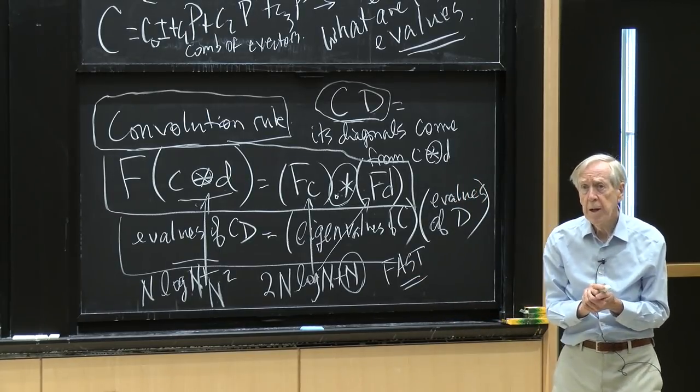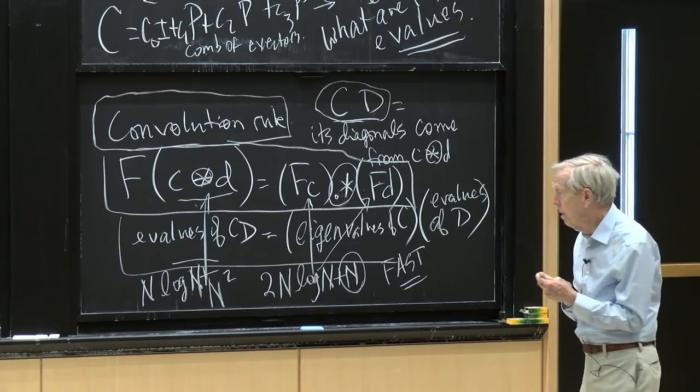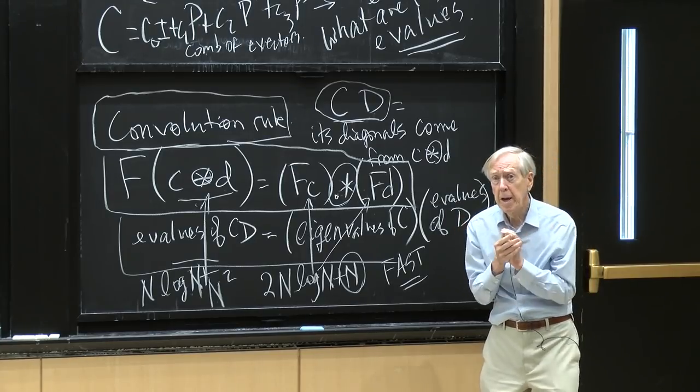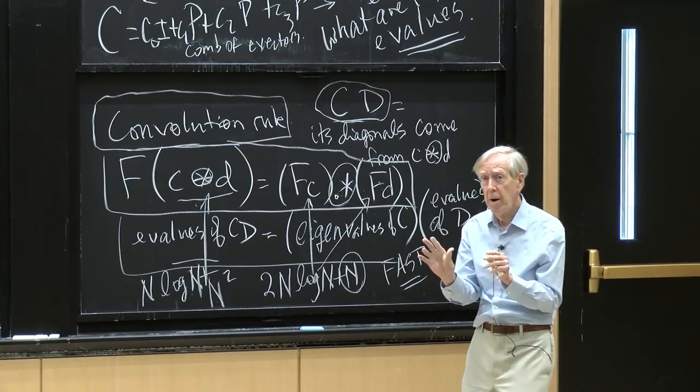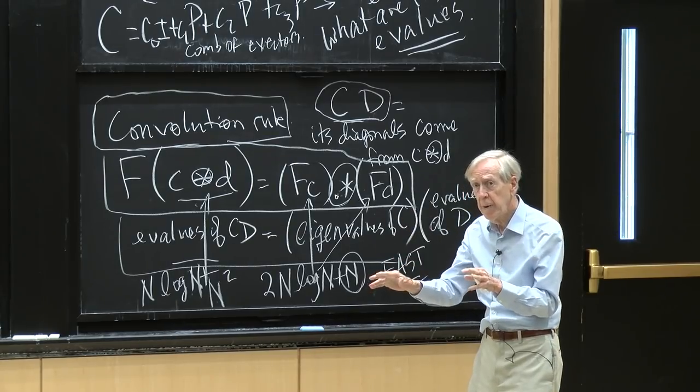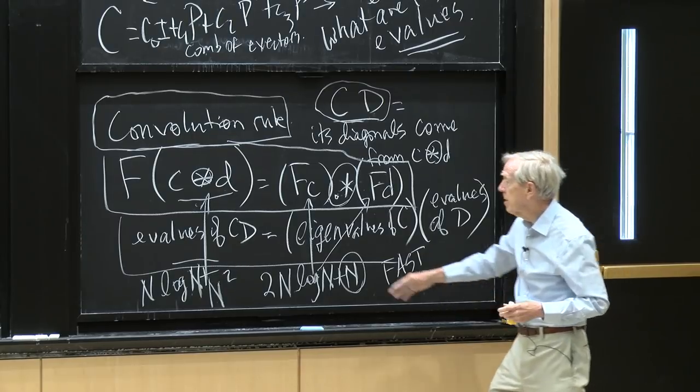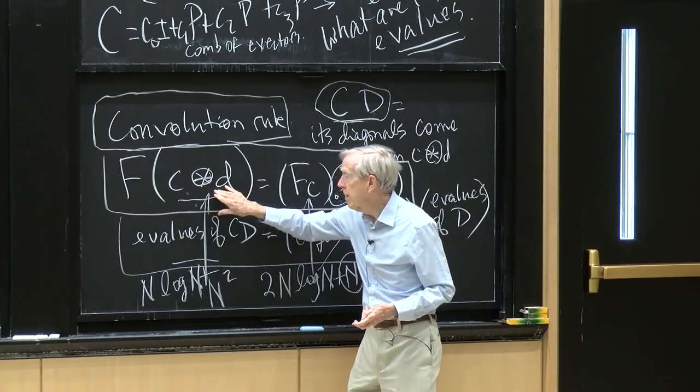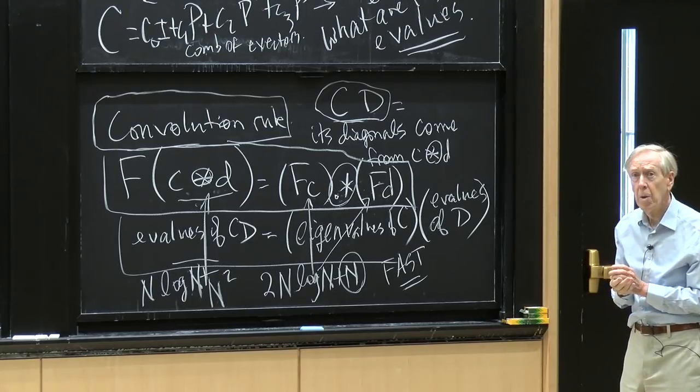So if you wanted to multiply two really big long integers, as you would want to do in cryptography, if you had two long integers, say, of length 125, 126, 128, 128 components. To multiply those, you would be better off to separately take the cyclic transform of each of those 128 guys and do it this way. Take the transforms, do the component by component product, and then transform back to get that. Yeah, yeah. So the convolution rule is what makes that go.